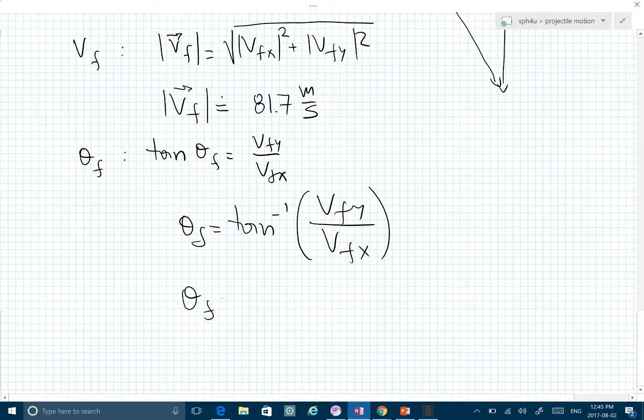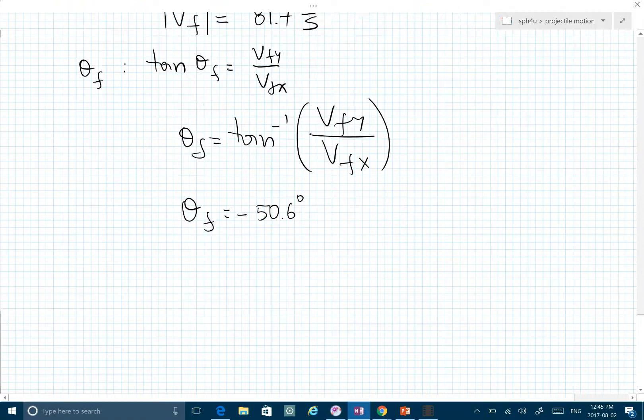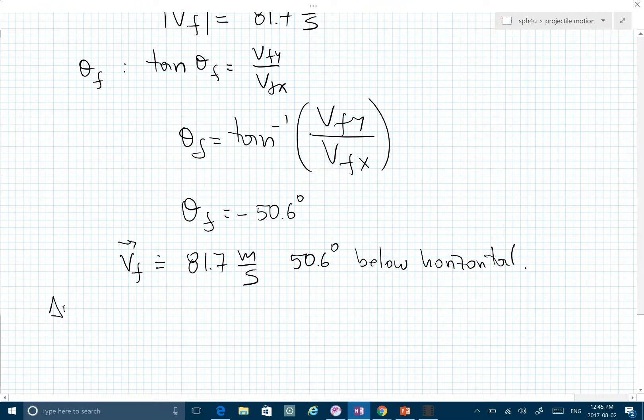...a negative angle, roughly negative 50.6 degrees. What does negative mean? It means the final velocity is 81.7 meters per second, 50.6 degrees below horizontal.